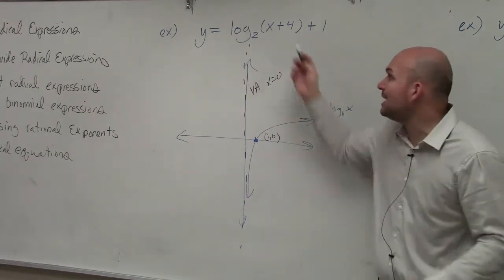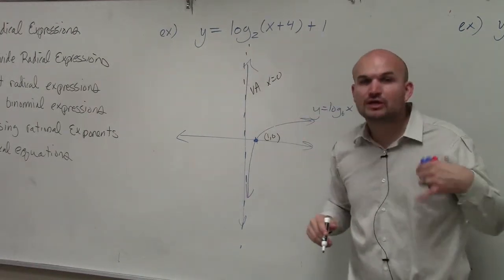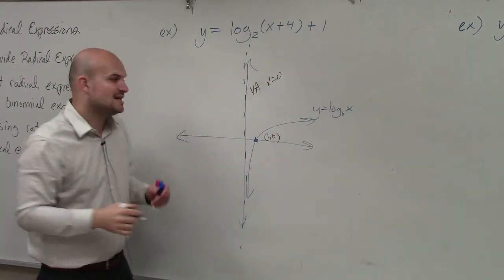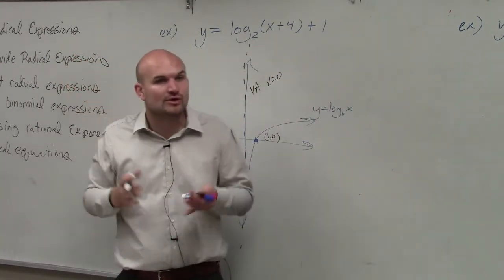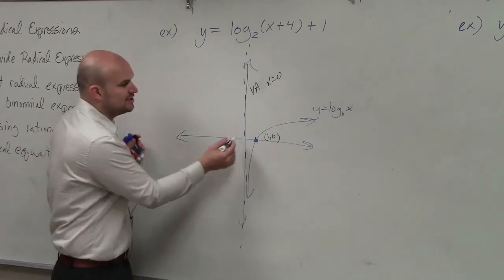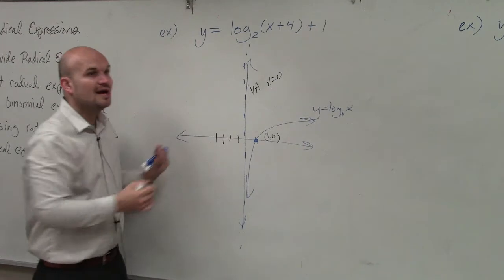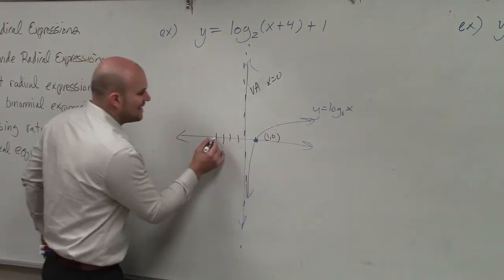So now, all we need to do is apply our transformations. When we look at our transformations, we see that I have x plus 4, which is going to tell me to shift my graph left 4 units. So what I'm going to do is I'm going to take my vertical asymptote, 1, 2, 3, 4, and I'm going to shift that left 4 units.